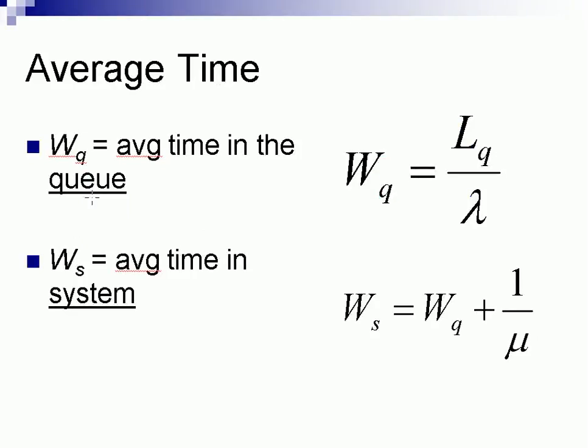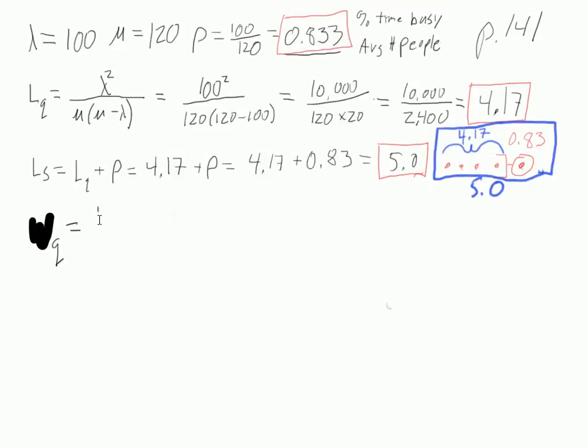Wq is equal to Lq divided by lambda. So Lq, that is 4.17. We will divide that by lambda, our arrival rate. So 4.17 divided by 100, we get 0.0417.